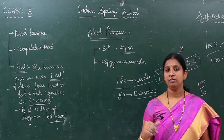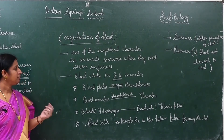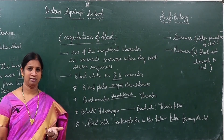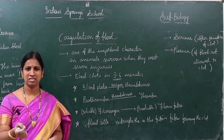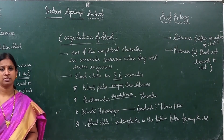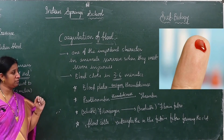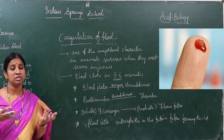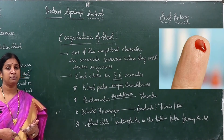Now the last concept: coagulation of blood. Coagulation generally happens when we face any type of injury. It is definitely useful for us — we all come across injuries, especially in childhood, when small cuts and wounds cause blood to ooze out. Coagulation is very important for all animals to survive severe injuries. Without coagulation, so much blood would ooze out and it could even lead to death.